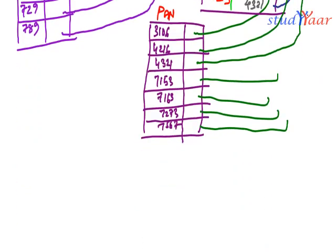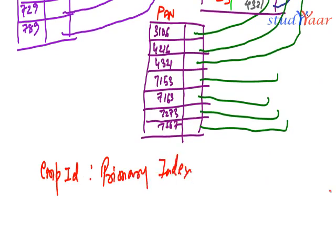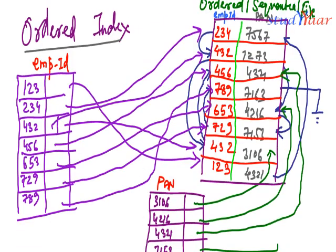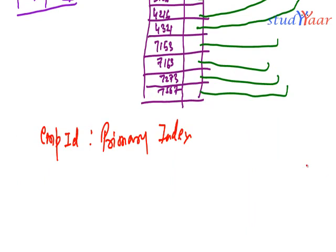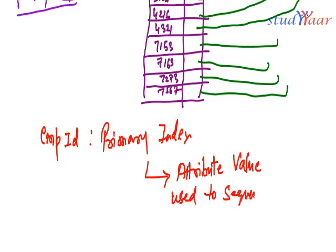In such a case, I call the employee ID index as primary index. Why? Because an index which is created on the basis of attribute value which is used to sequentially arrange the file is known as a primary index. Primary index is an index which is based on an attribute value used to sequentially arrange the file.